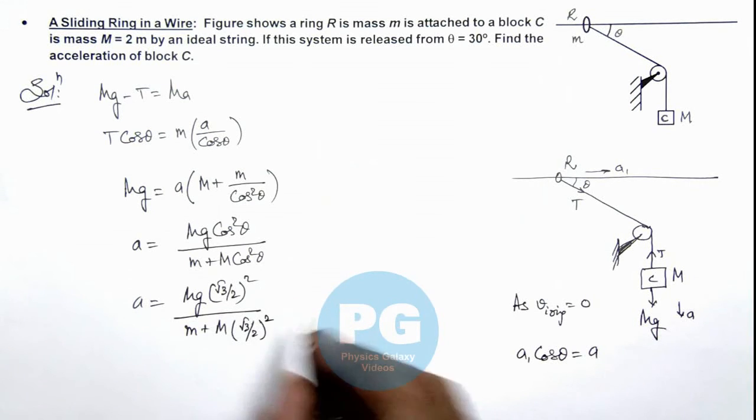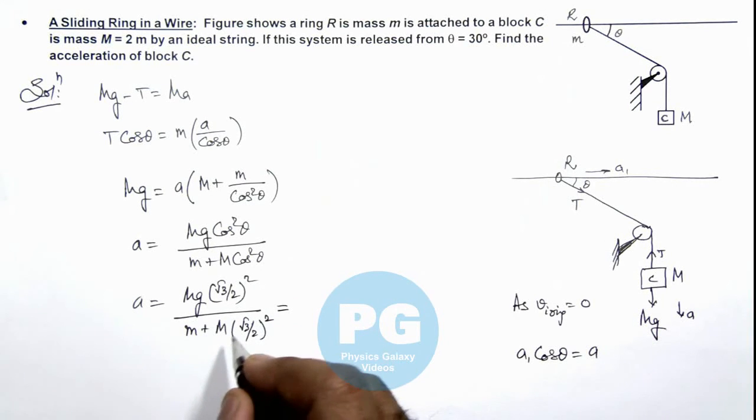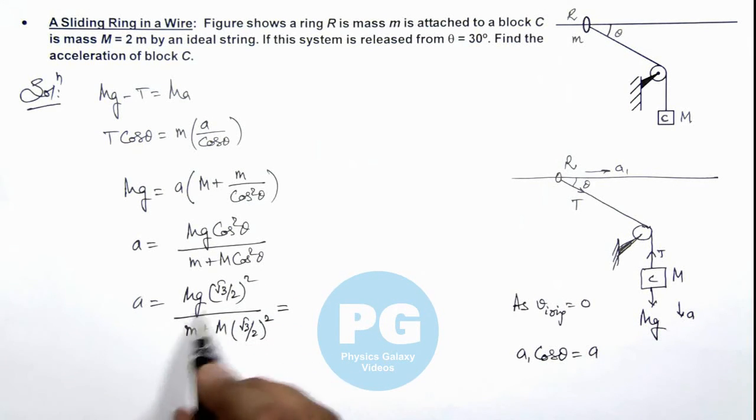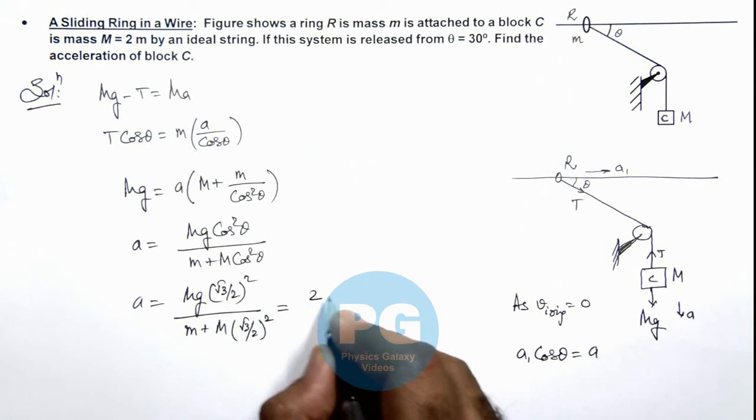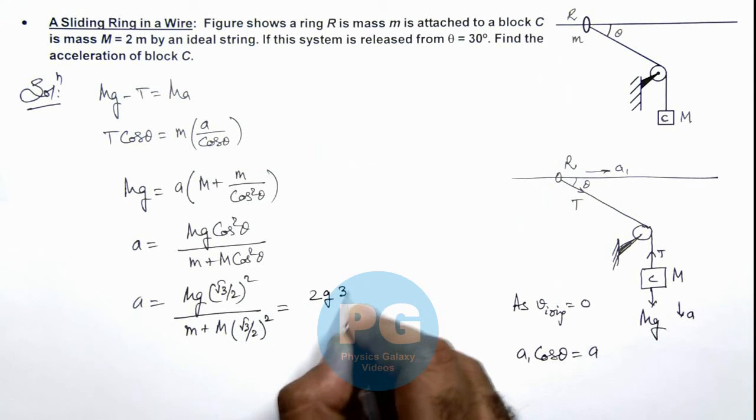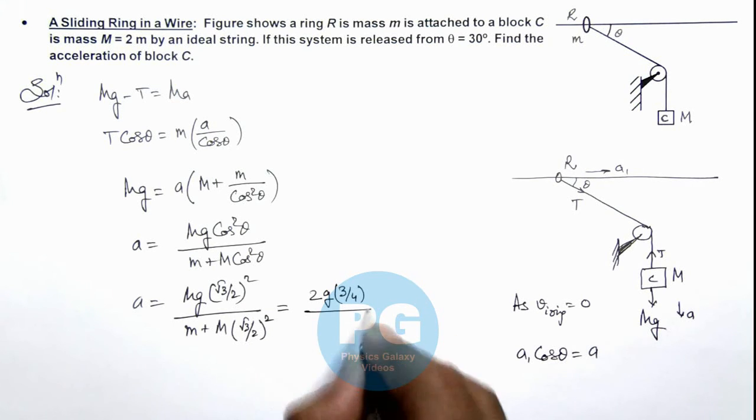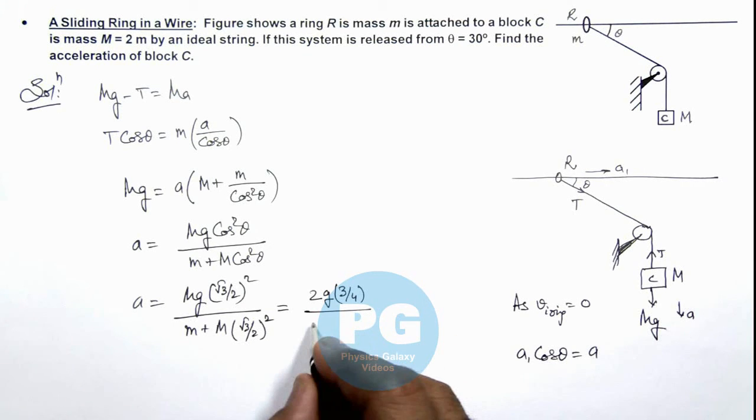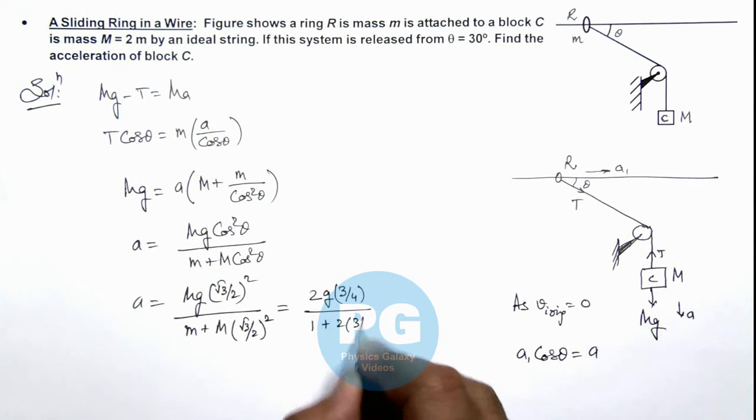So if we substitute the same, here you can see we are getting this is twice of g multiplied by 3 by 4, divided by... this m gets cancelled out, so this will be 1 plus twice of 3 by 4.